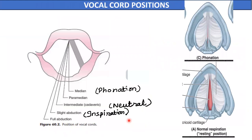Vocal cord paralysis can also occur, but before discussing it we must know the normal vocal cord positions during phonation and respiration. During phonation, both vocal cords lie in the median or slightly adducted position and a very narrow gap is present between the two cords in both the intermembranous and inter-cartilaginous parts. During normal respiration, there is slight abduction and both the intermembranous and inter-cartilaginous parts are slightly open.